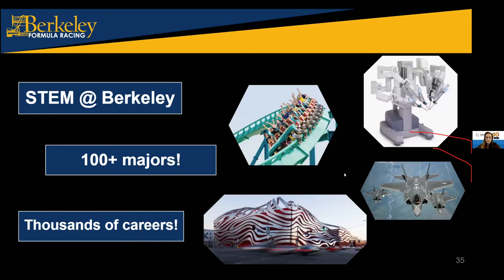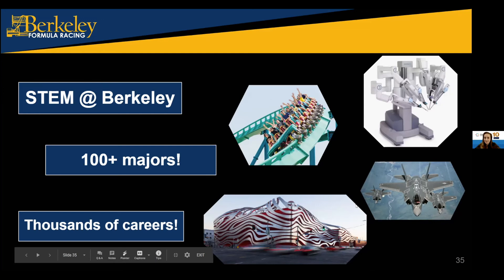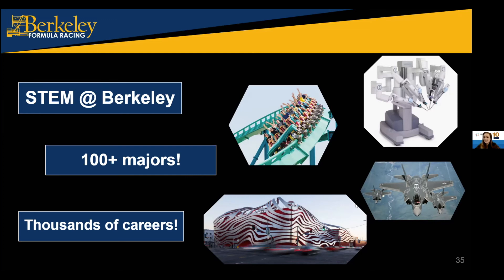We also want to touch on STEM at Berkeley. There are over 100 majors at Berkeley, and a good portion are STEM. Within STEM, there are thousands of careers — you can go into automotive, aerospace, or even designing roller coasters. Berkeley is so cool for that because there are so many different ways to investigate it. Even in this call, we have a mechanical engineering major, a data science major. One of our alumni is on the Ferrari Formula One team. There are so many different areas you can take STEM at Berkeley.